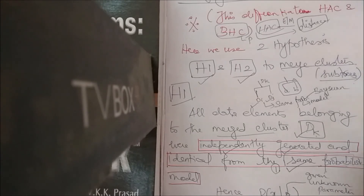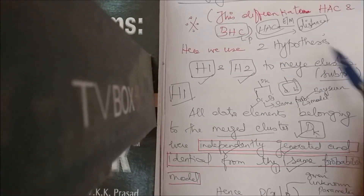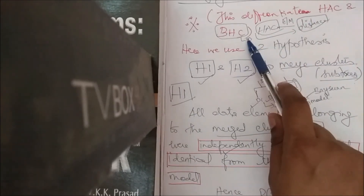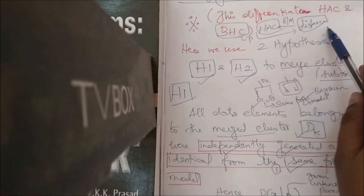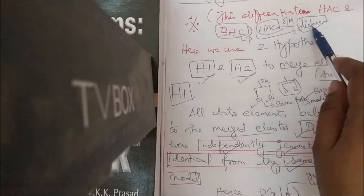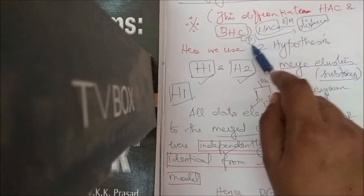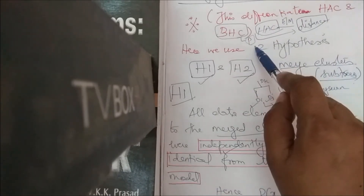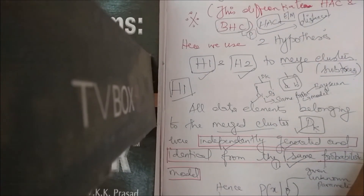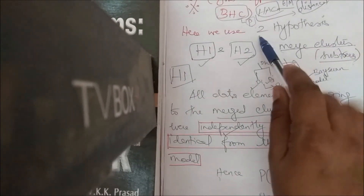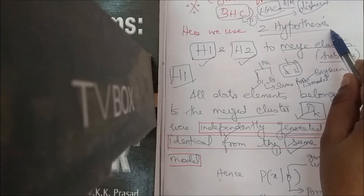Welcome back. We were looking at Bayesian hierarchical clustering. The key difference between HAC and BHC is the distance calculation: HAC uses Euclidean or Manhattan distance, whereas BHC uses a probabilistic approach. BHC is based on two important hypotheses, H1 and H2.